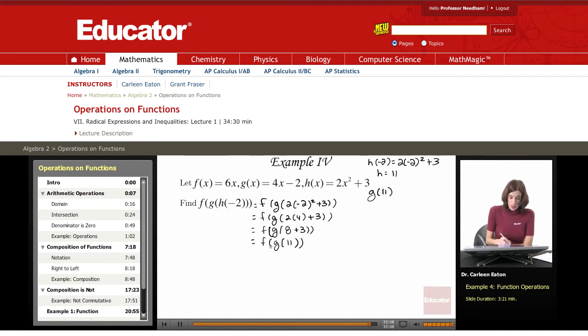Well, g of x equals 4x minus 2, so substituting 4 times 11 minus 2 equals 44 minus 2, which equals 42. So g of 11 equals 42.